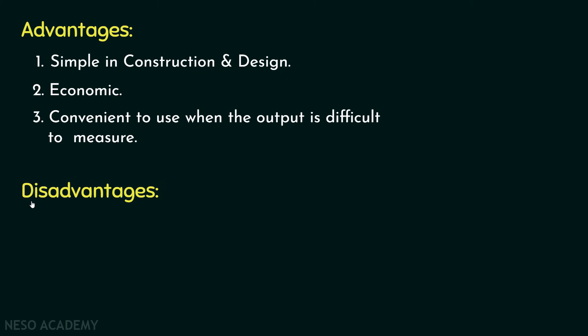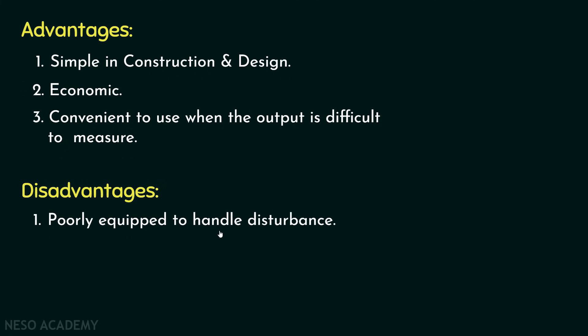We have some advantages of using open loop systems, but on the other hand we also have some disadvantages. The major disadvantage of using any open loop system is it is poorly equipped to handle disturbance, and as it can't handle disturbance, it is not reliable. So in order to remove these disadvantages, we will add a feedback factor from the output side to the input side, and in this way we will move on to closed loop systems.